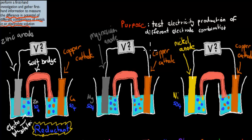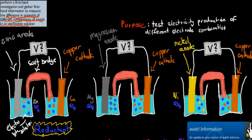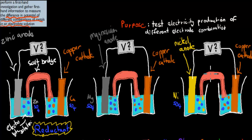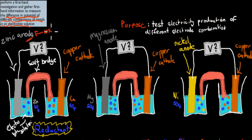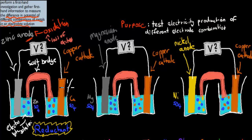The most important part when it comes to this experiment would be your different types of electrodes: Zinc and Copper with one galvanic cell, Magnesium and Copper with another, and Nickel and Copper with the third. The reason why it's important is because we try to measure the electricity flow — how much electricity flows from the anode to the cathode. The anode is where oxidation occurs, and oxidation is the loss of electrons. So electrons or electricity flow from the anode and go to the cathode. What we're actually measuring is how fast they flow.